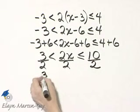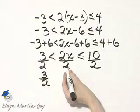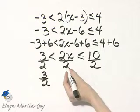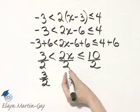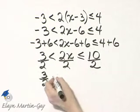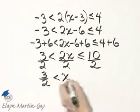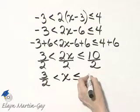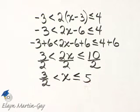The left side, that's 3 halves. By the way, I am dividing by a positive number so I do not change the direction of my inequality symbol. The middle, the 2's divide out, and I have simply x, and then less than or equal to 10 divided by 2 or 5.